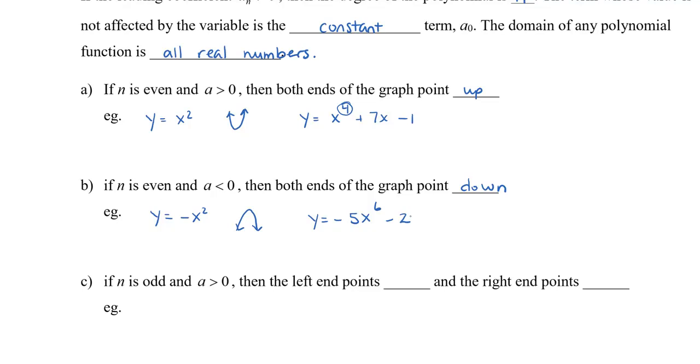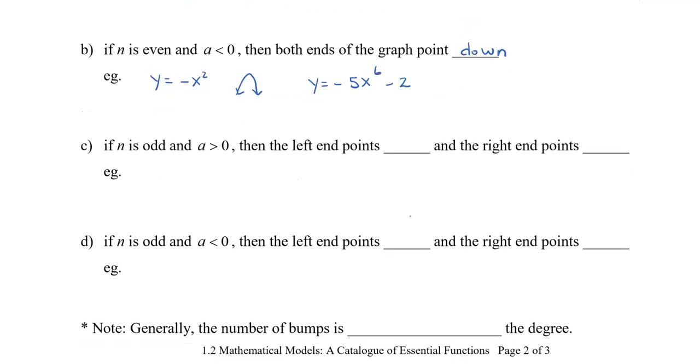If n, the exponent, is odd and the coefficient is positive, then the left end will point down and the right end points up. The most common example that you've probably seen is y = x, so that's just a line. Notice the left end points down and the right end points up. And even in y = x³, you can see that the left points down and the right side points up.